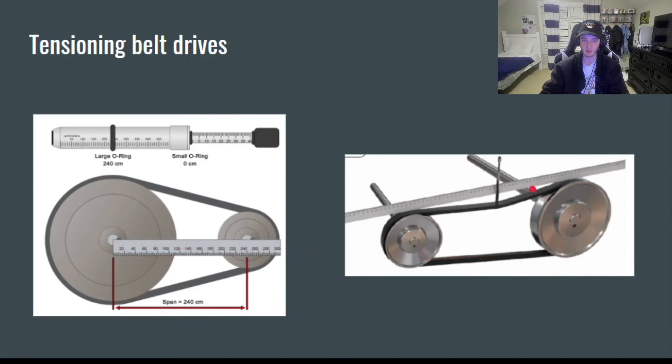So to properly measure the tension of your belt drive system, you want to start by moving the large-scale O-ring, that's this one, to the centimeter distance between the center of two sheaves. You can see that in this picture, it would be 240 centimeters, so they have it moved to the 240 centimeter mark. And you want to move this small ring over to zero.